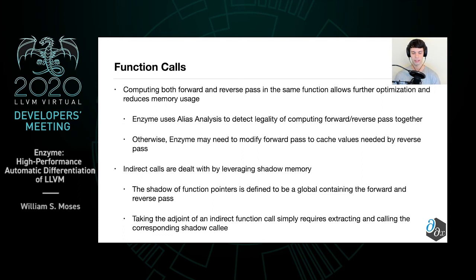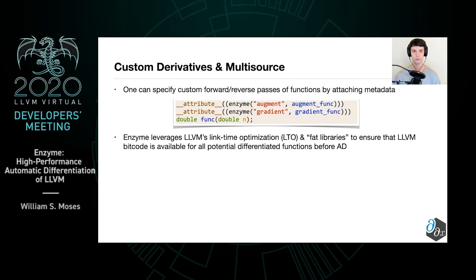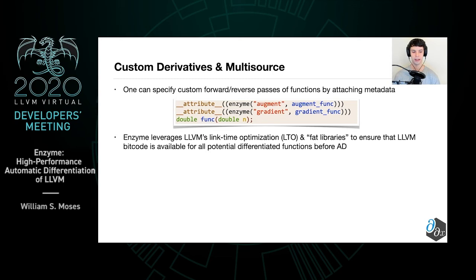We also allow users to specify custom forward and reverse passes. This is quite useful either for users who have a better algorithm than the default for differentiating a particular function, or if there is code that is not accessible to Enzyme. In particular, this is done by attaching LLVM metadata on top of functions. We also provide a mechanism inside of Clang that creates an attribute that puts that metadata on automatically. Additionally, LLVM is able to perform differentiation on both multi-source codes as well as codes with libraries by leveraging link-time optimization and what are known as FAT libraries. These techniques ensure that the LLVM for all of these pieces of code is available at link time, so we can perform the automatic differentiation step after that.